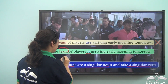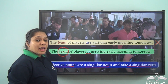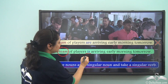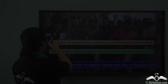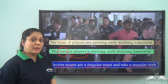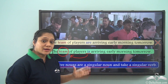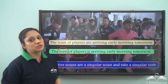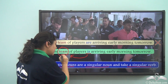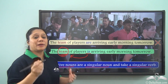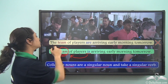Team is a collective noun and we will always use a singular verb with the collective noun. When I say the team of players, I am referring to a particular team, so this collective noun refers to a specific, particular group.